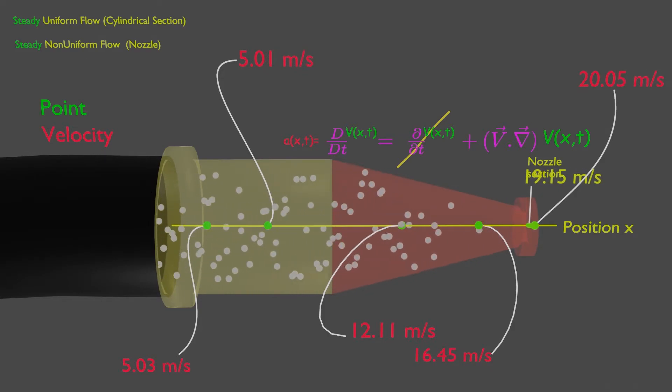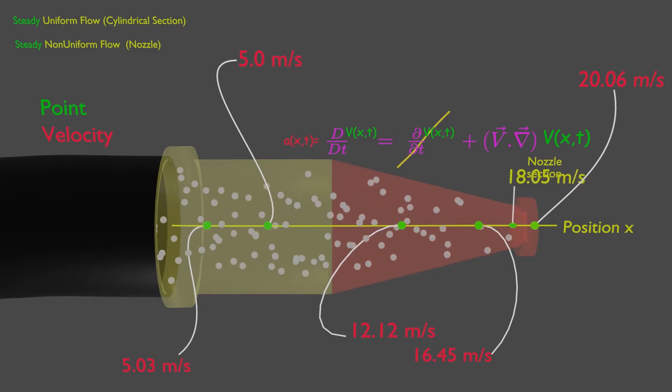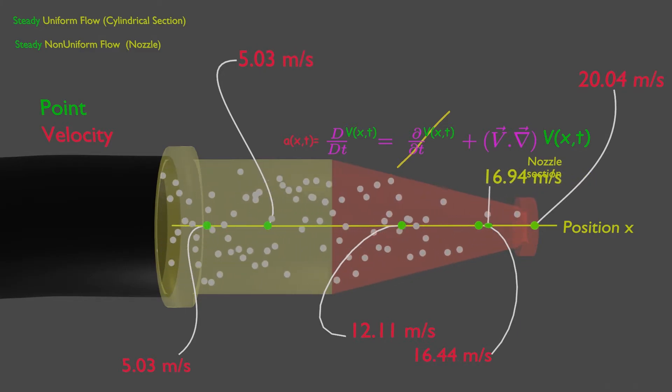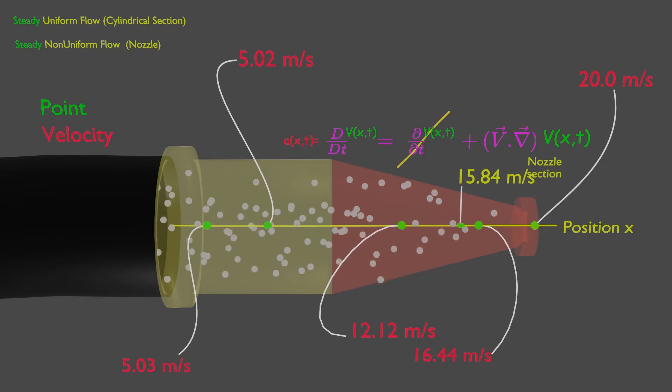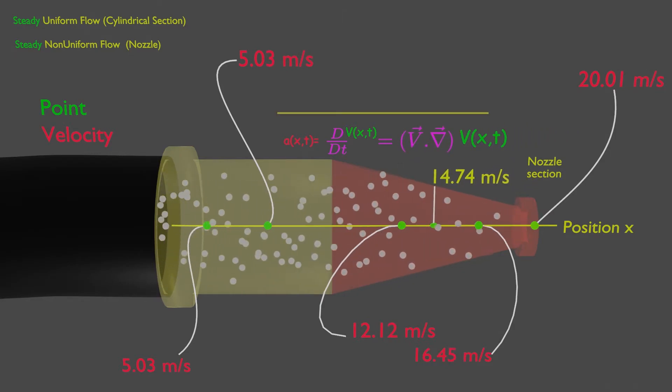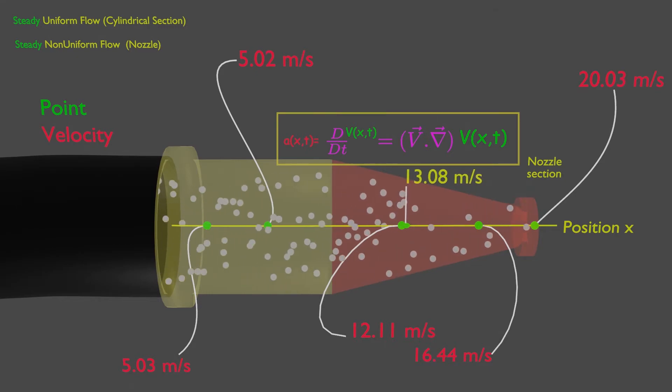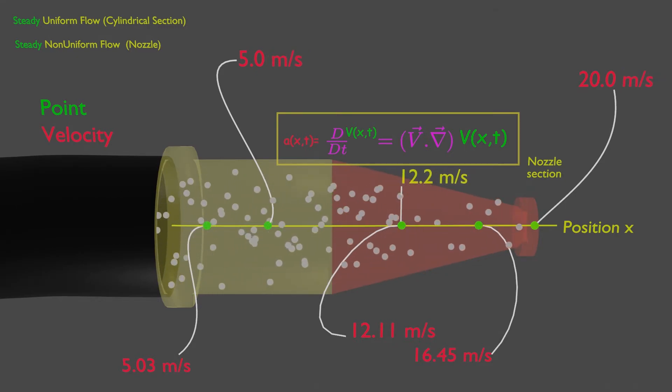But the velocity is increasing along the position of this nozzle and changes from one position to the next, so there exists acceleration because velocity is increasing along its position. This non-uniform flow creates acceleration.